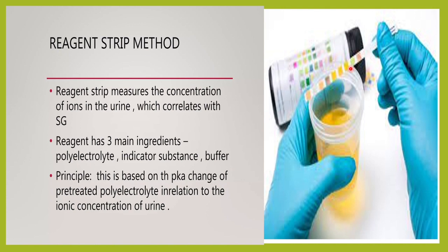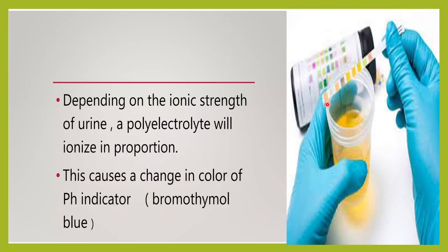The principle of specific gravity in the reagent strip method is based on the pKa change — the acid dissociation constant — depending upon the ionic concentration of the urine. Depending upon the ionic strength, the polyelectrolyte already placed on the strip will ionize. The more the solute, the more will be the ionization, and there will be a color change in the form of bromothymol blue — a pH indicator. When you get the color change, we measure the specific gravity.